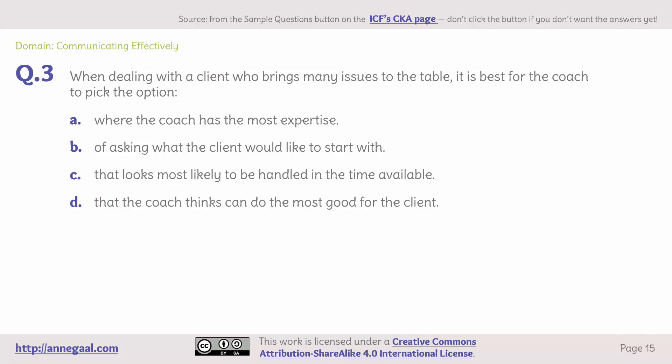Domain: communicating effectively. Question 3. When dealing with a client who brings many issues to the table, it is best for the coach to pick the option — A. Where the coach has the most expertise. B. Of asking what the client would like to start with. C. That looks most likely to be handled in the time available. Or D. That the coach thinks can do the most good for the client.